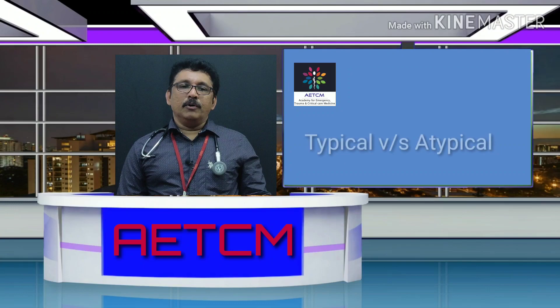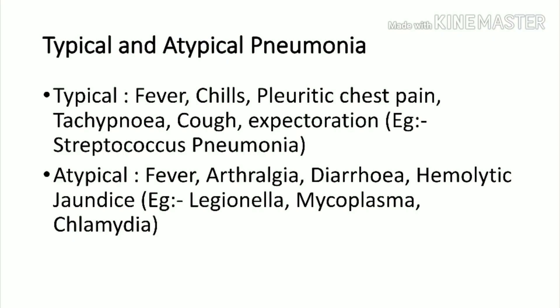Typical pneumonia presents with fever, chills, pleuritic chest pain, tachypnea, cough, and expectoration — classically seen in Streptococcus pneumoniae. Atypical pneumonia means the patient can have fever, arthralgia, diarrhea, hemolytic anemia, and jaundice. These are classically seen with Legionella, Mycoplasma, and Chlamydia. Depending on the bacteria, clinical findings may vary.